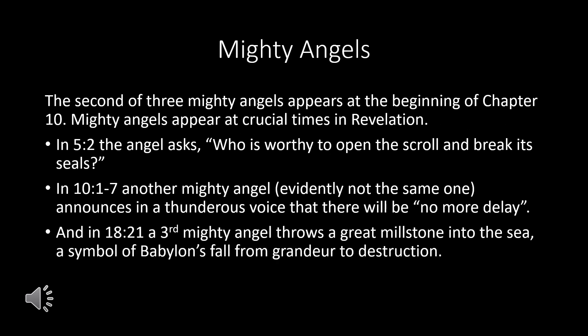This is the second of three mighty angels appearing in Revelation, appearing at the beginning of chapter 10. Mighty angels appear at crucial times. Back in chapter 5, verse 2, a mighty angel asked, 'Who is worthy to open the scroll and break the seals?' Here we have another mighty angel — evidently not the same one — that announces in a thunderous voice that there will be no more delay. And then in chapter 18, verse 21, at the end of Babylon's destruction, a mighty angel throws a great millstone into the sea, symbolizing Babylon's fall from grandeur to destruction. So we want to pay close attention when the mighty angels show up.